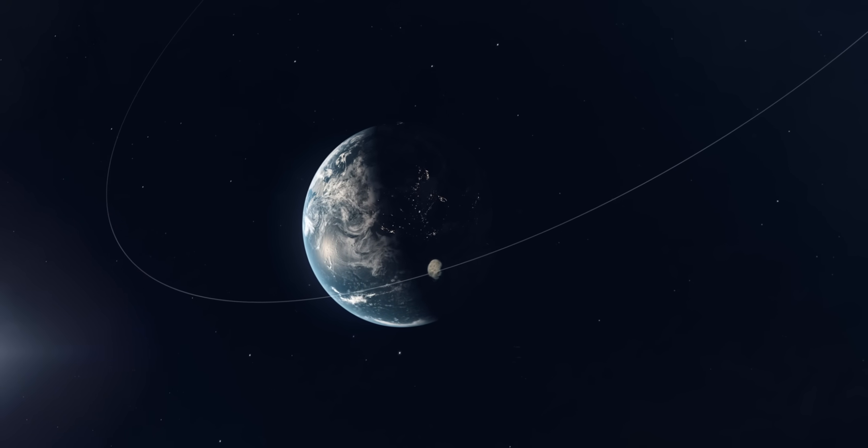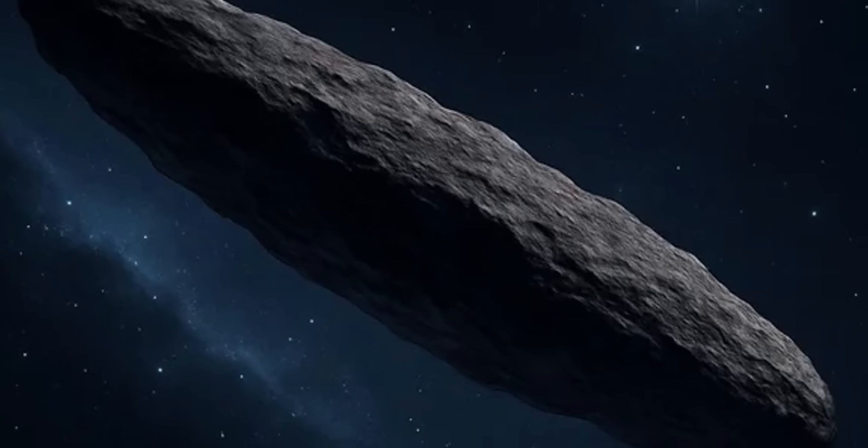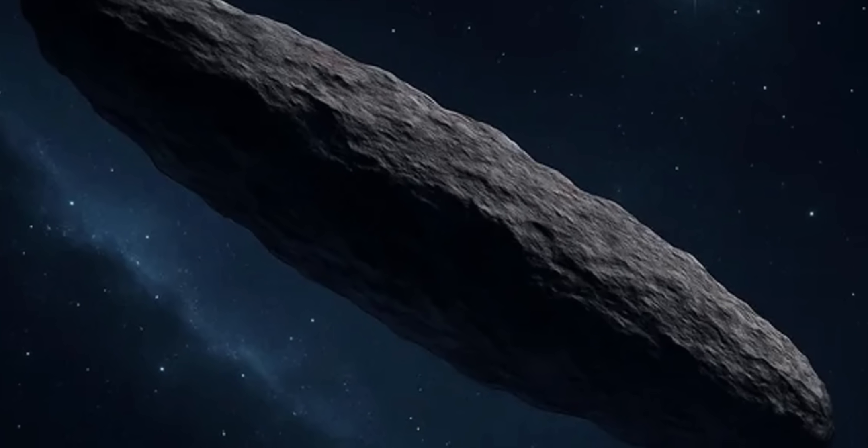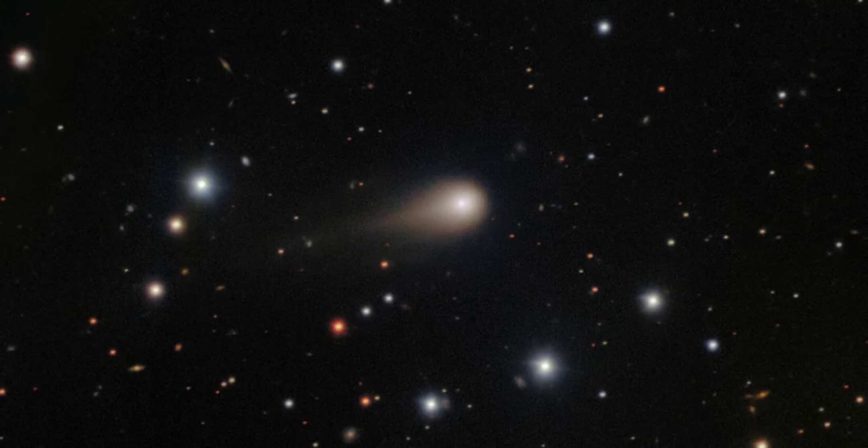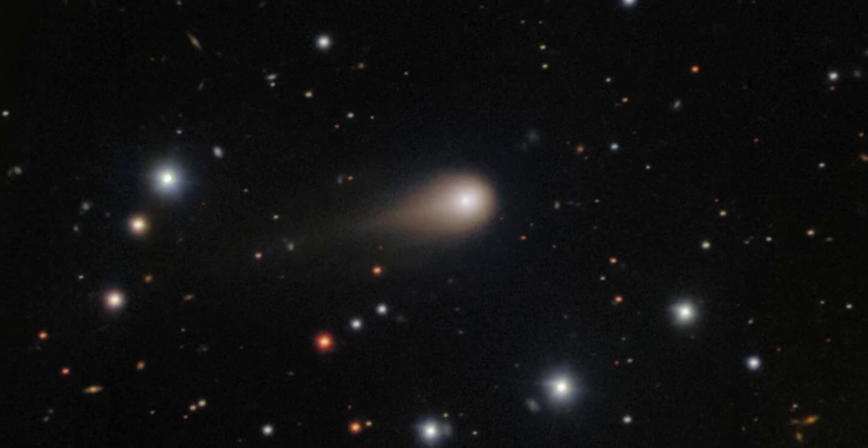Why is it so bright? Why is it so large? Why does it travel against the natural flow of the solar system? Why now, so soon after our first interstellar discoveries?